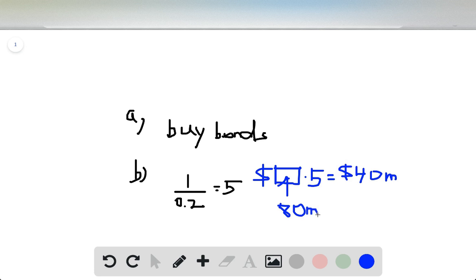So now we can fill in this blank. This is $80 million. The answer to question B is that the Fed needs to buy $80 million of bonds.